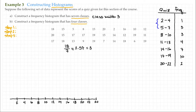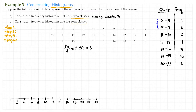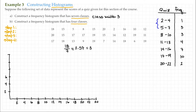Now that we have our distribution table, step four is to draw the histogram. I'll put in my frequency axis here. The largest frequency is ten, for scores between 17 and 19, so I don't have to go much higher than that — I'll count up to twelve: two, four, six, eight, ten, and twelve.